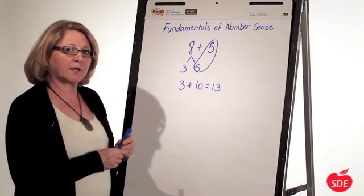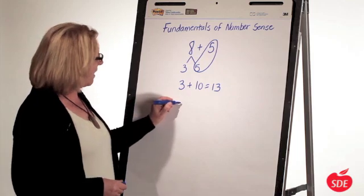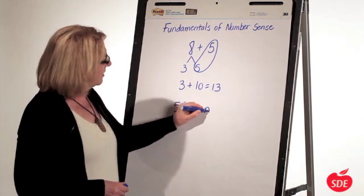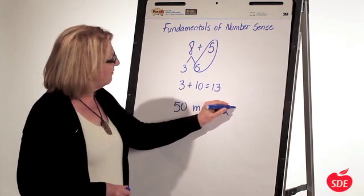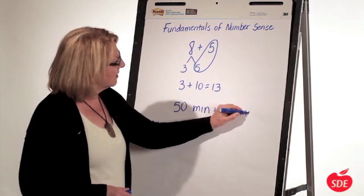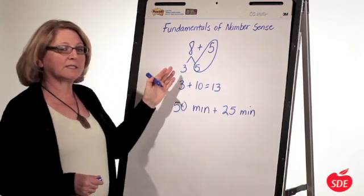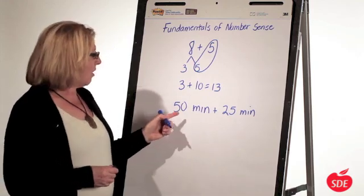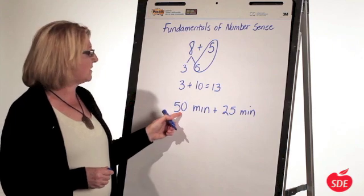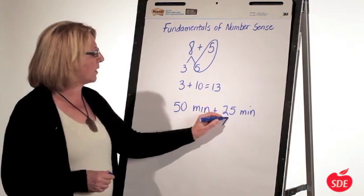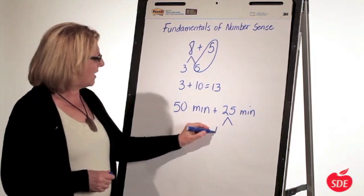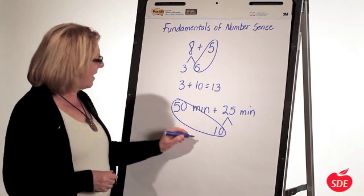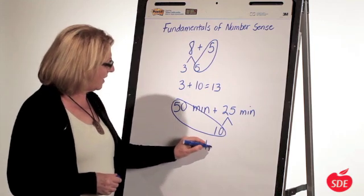What about if I'm doing time? I'm adding 50 minutes plus 25 minutes. My unit isn't 10 anymore. Now I'm trying to build an hour. Oh, it's pretty easy to get that 50 minutes to an hour. I'm going to break 25 minutes apart. If I give 10 minutes here, there's my hour.